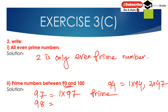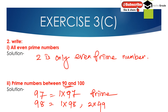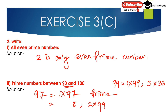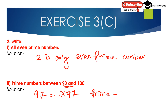98 is not a prime number because 1 multiplied by 98 and 2 multiplied by 49 give more than 2 factors. And 99 also has more than 2 factors, so it is not a prime number. So the only prime number between 90 and 100 is 97.